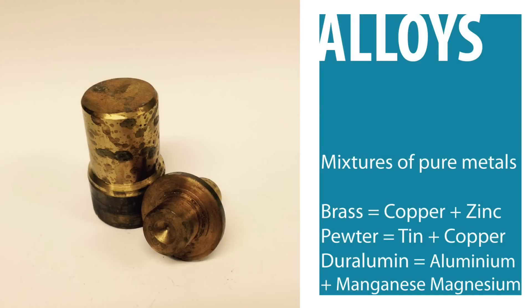Sometimes we need metals that have different properties from aluminium, steel, or copper. To do this, metallurgists can mix pure metals such as copper and zinc to create brass, or tin and copper to make pewter.